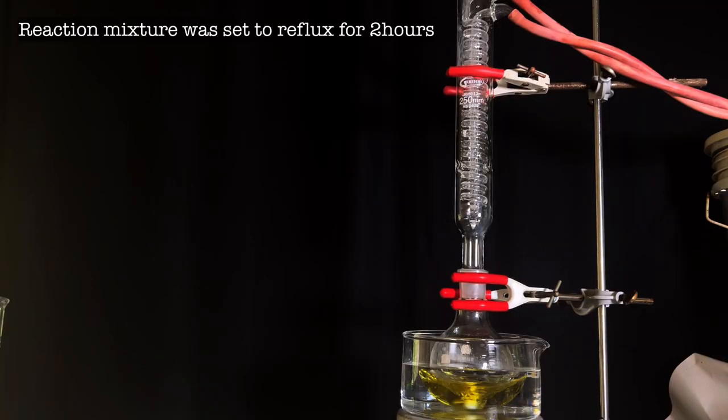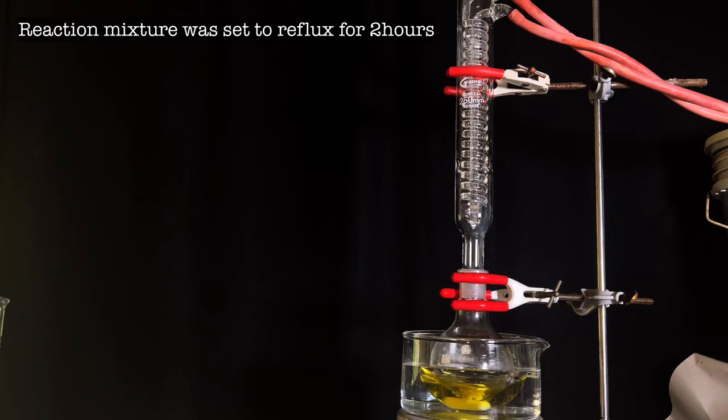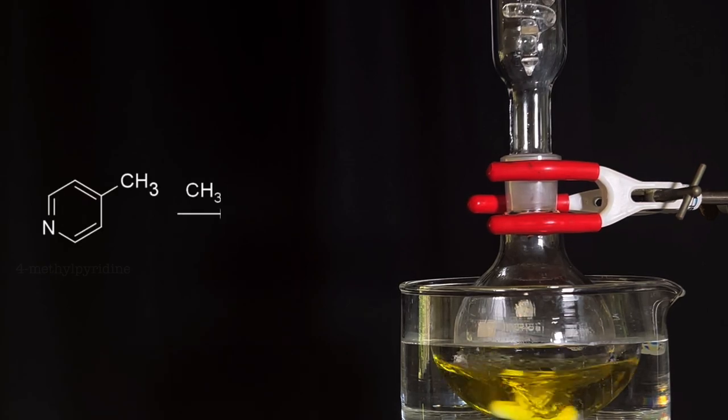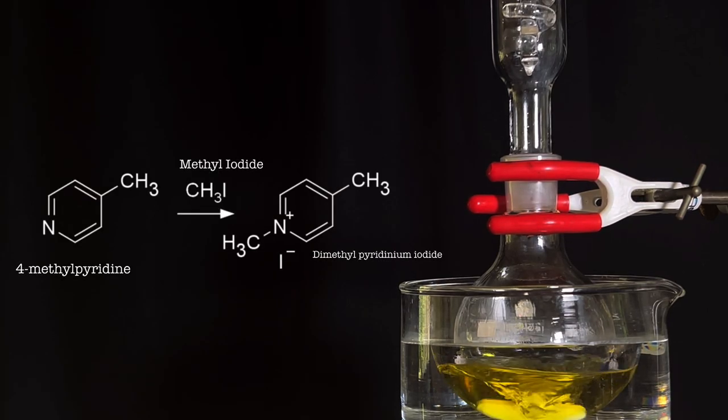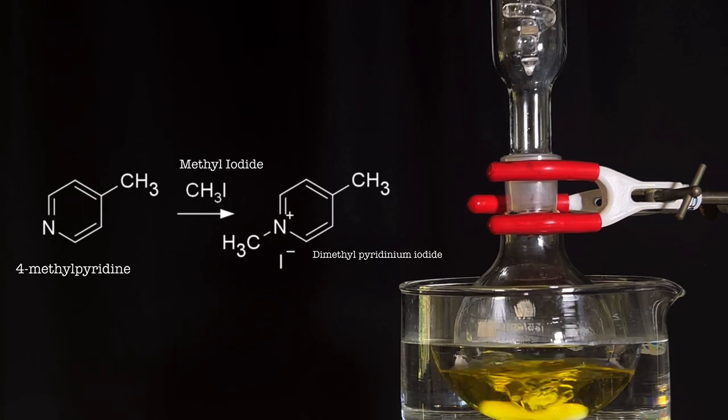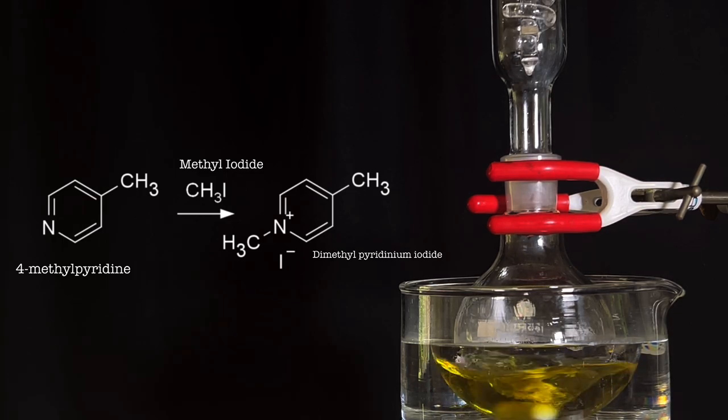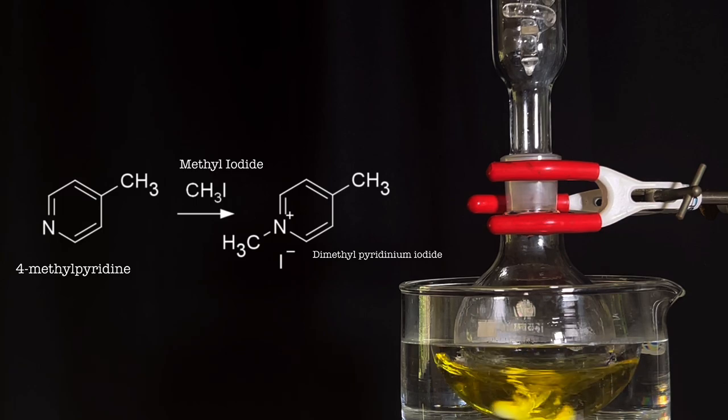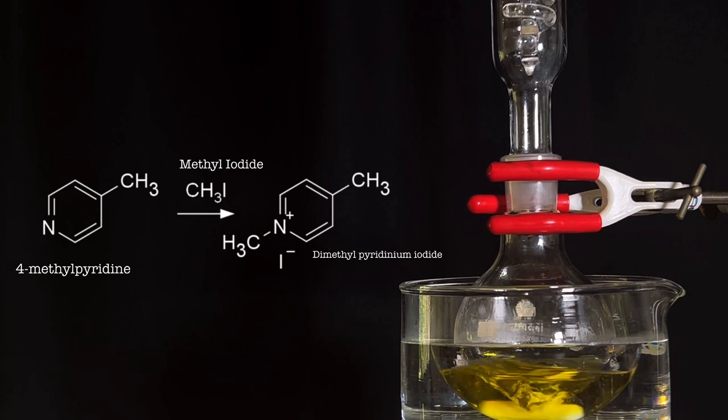A dimroth condenser was attached on top of the reaction flask and the flask was immersed in a boiling water bath. The contents of the reaction flask is set to reflux for 2 hours. Now let us see what is happening here. Here, the 4-methylpyridine is methylated by iodomethane which is one of the best methylating agents. This gives rise to 1,4-dimethylpyridinium iodide which is the intermediary product which we need to collect for continuing with the next step of the synthesis.